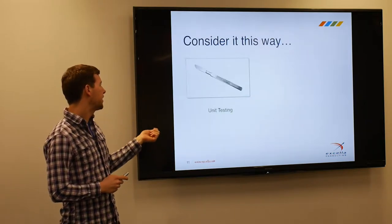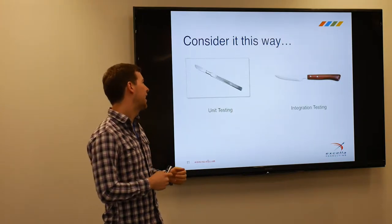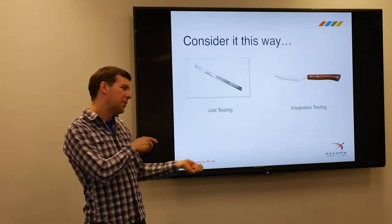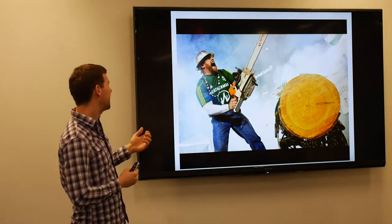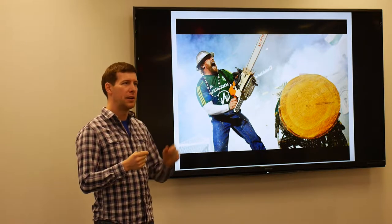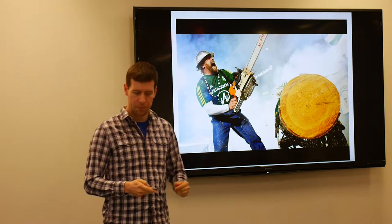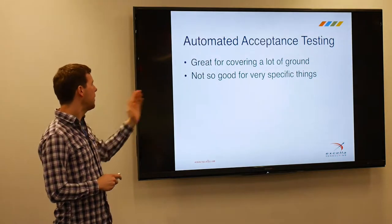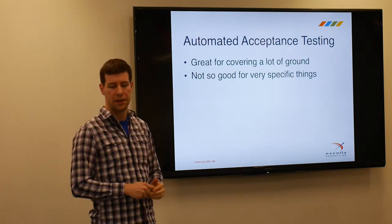Automated acceptance testing is great for a certain set of things, but it is not a silver bullet that will solve all our problems — it does not replace unit or integration testing. It complements and adds to the richness of our software quality. Think of it this way: unit testing is like a scalpel, integration testing is like a steak knife, and automated acceptance testing is really like a massive chainsaw — it cuts through a lot of stuff but is not great for fine-grained things.